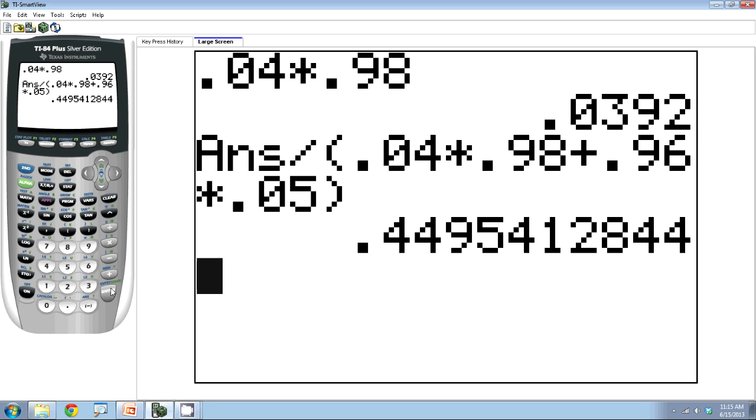Notice how I put parentheses around the entire denominator. This is to make sure that it divides by the whole denominator, not just by the first part. So the order of operations here is important and the calculator always follows them. If you don't put parentheses, it's going to divide first before it adds.